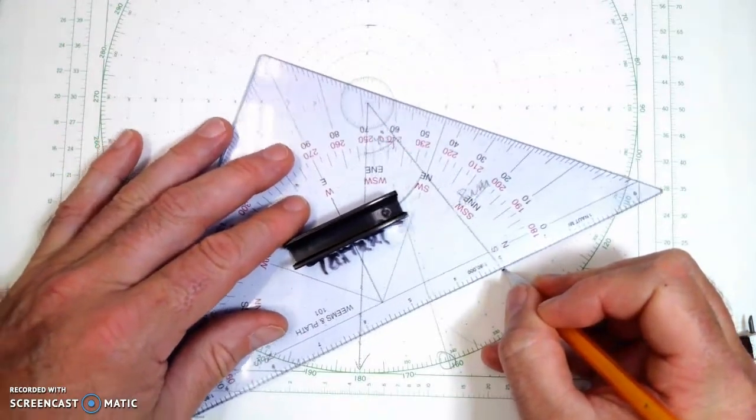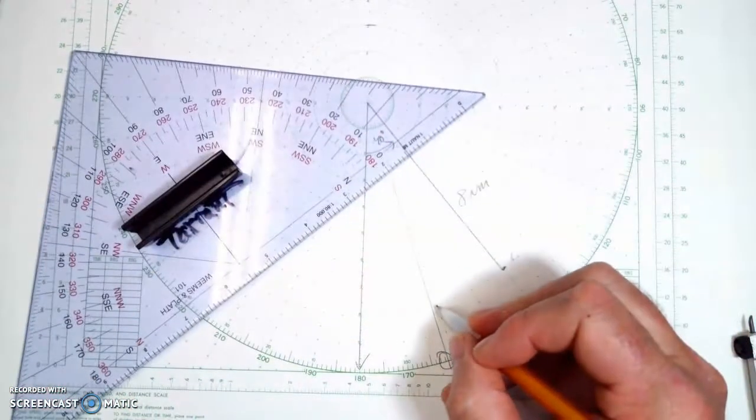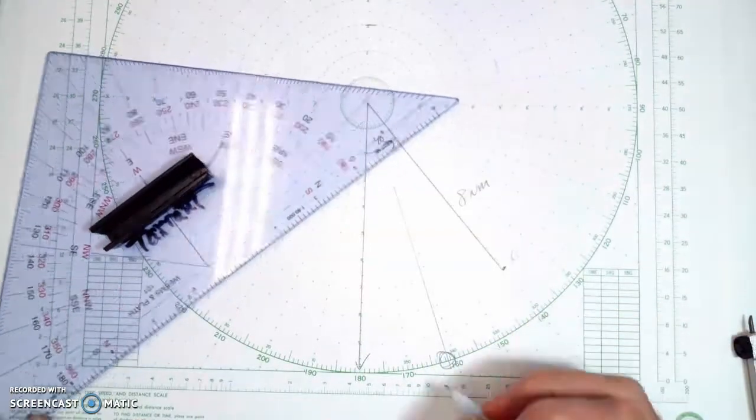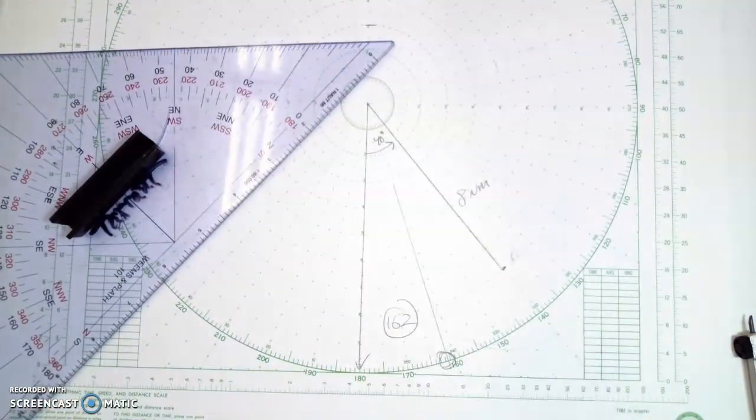And there's our course right there. So the course we should steer is 162. That's the answer.